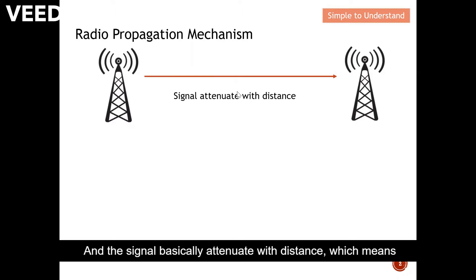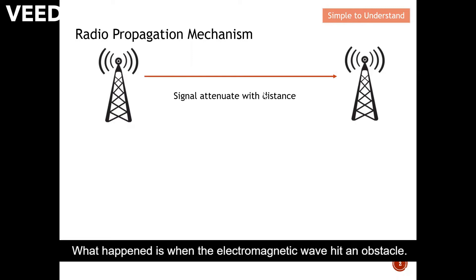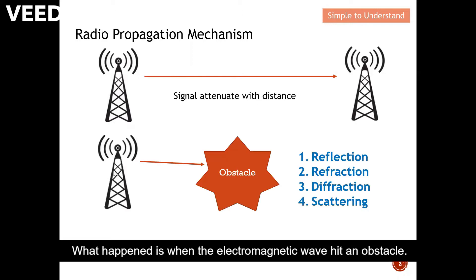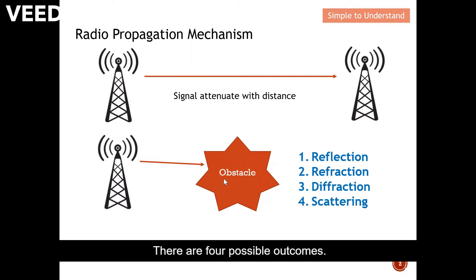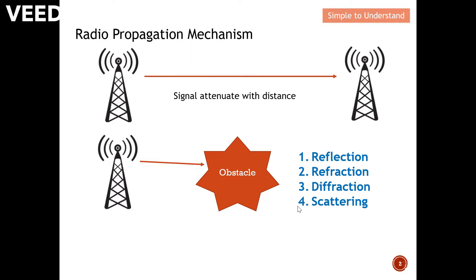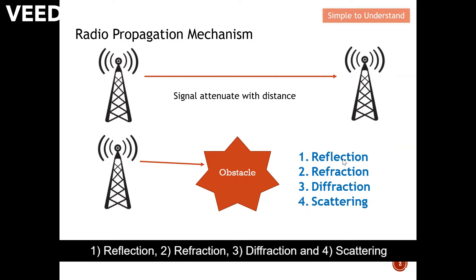Without any obstacle, the wave will continue on and on, but the signal attenuates with distance, meaning it becomes weaker with respect to distance. When the electromagnetic wave hits an obstacle, there are four possible outcomes: number one, reflection; number two, refraction; number three, diffraction; and number four, scattering.